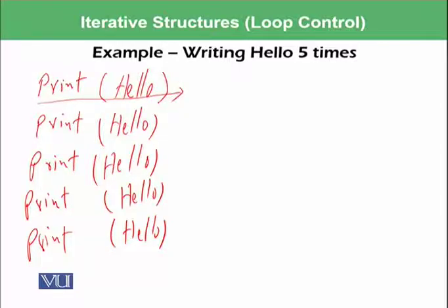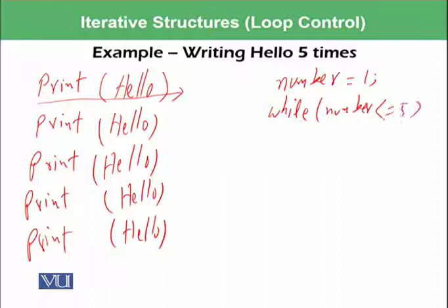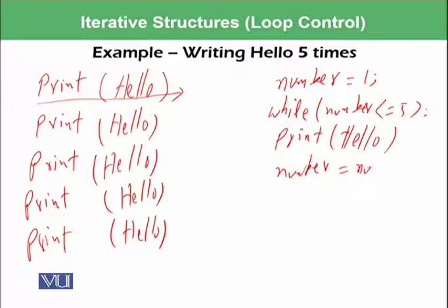We can design a loop that would be controlling this print statement. We can write for example number is assigned by 1 while number is less than equal to 5 print hello and number is assigned by number plus 1. This kind of module we had already discussed but I will explain again.